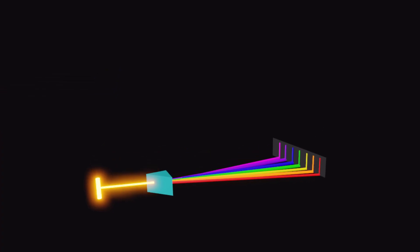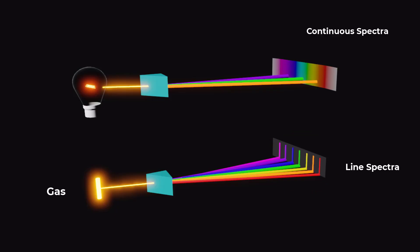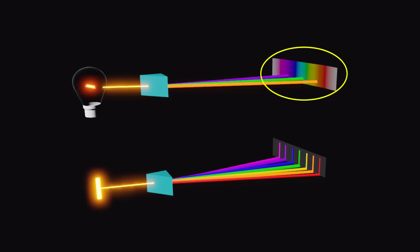There are two main types of spectra: line spectra and continuous spectra. Line spectrum is made up of discrete lines produced by gases, while continuous spectrum is a rainbow of colors blending smoothly into each other without any gaps and contains a continuous range of colors or wavelengths. Solids, liquids, and dense gases produce continuous spectra.